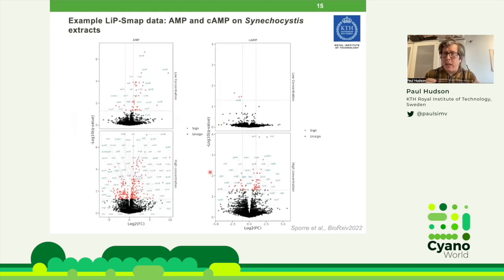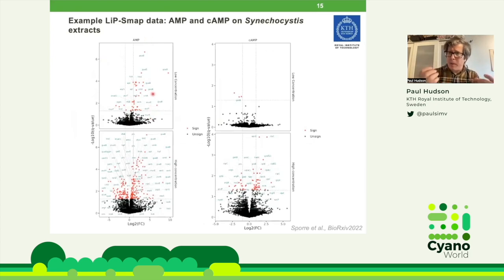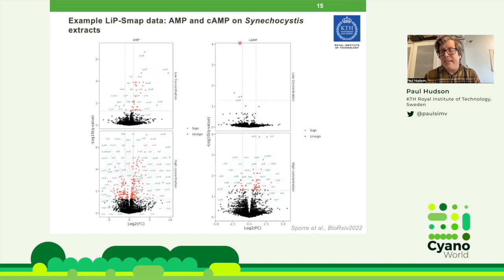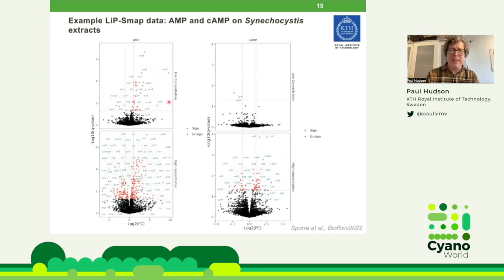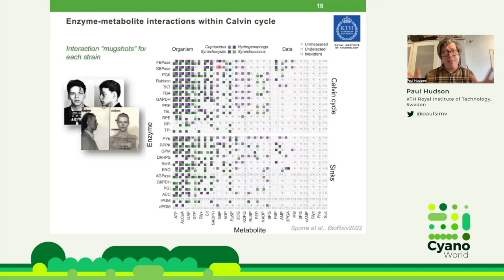I'll give you the story of using one of these methods — a preprint on BioRxiv. We have done this LiP-MAP method — limited proteolysis — testing primarily Synechocystis and also some lithoautotrophs. This is an example of what the data look like. We added AMP — an energy status metabolite — and this volcano plot shows peptides from the proteome of Synechocystis that are altered when the metabolite was added. When we add cyclic AMP, a signaling metabolite not really known as an enzyme effector, we see few interactions — as expected. AMP, known as an enzyme effector, shows many more interactions.